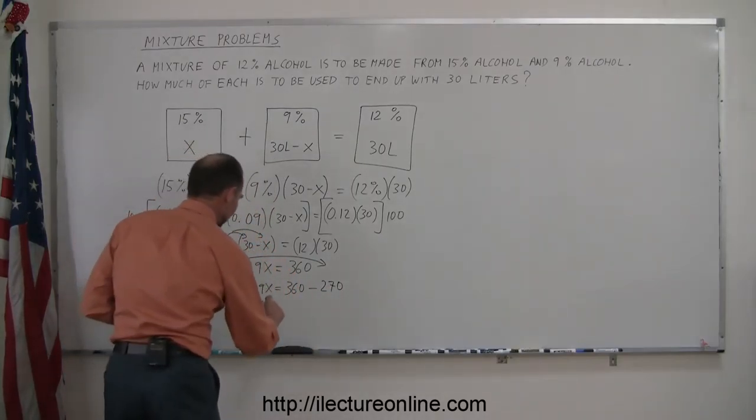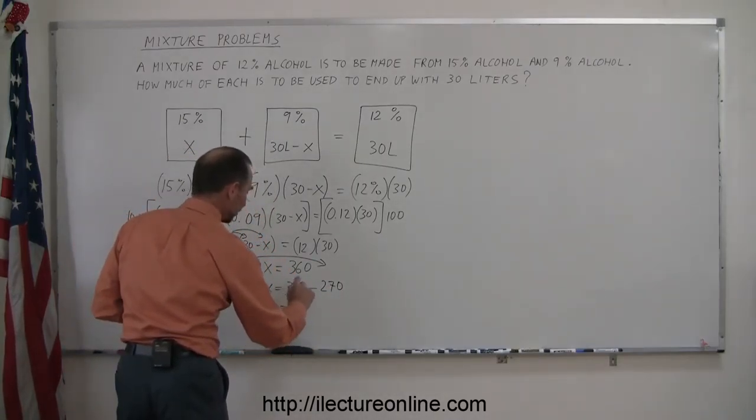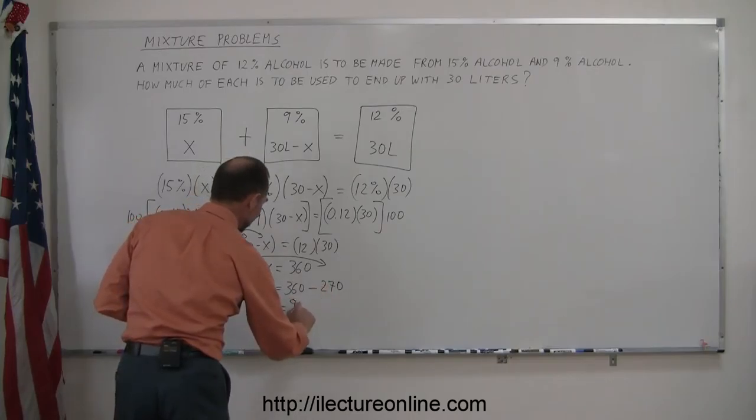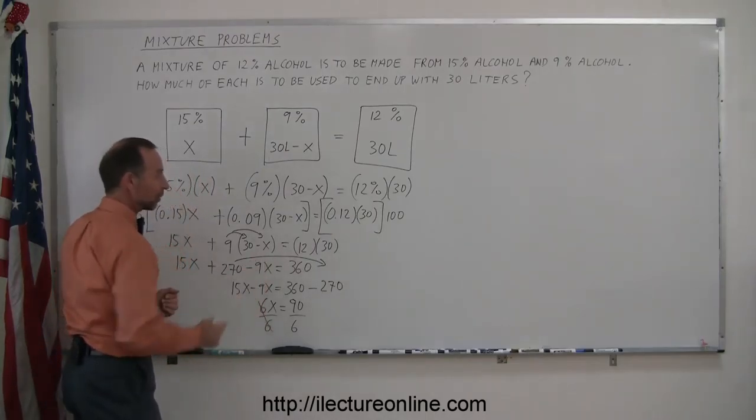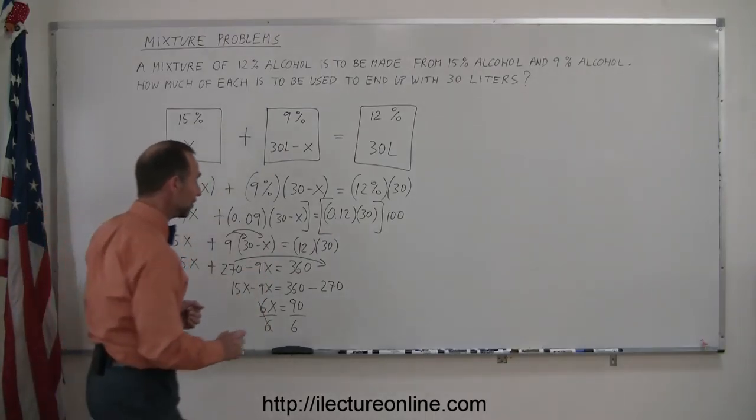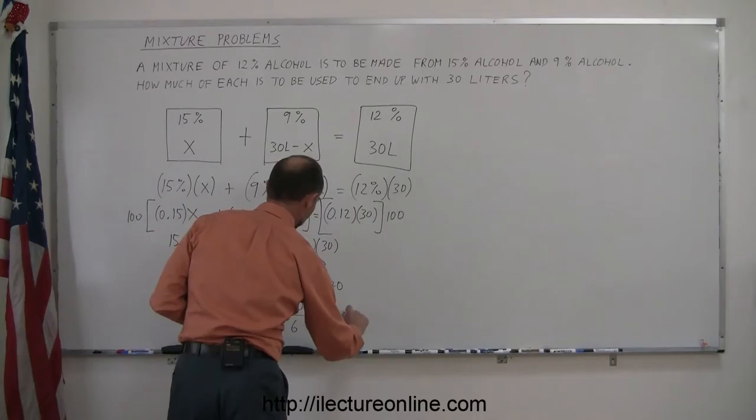15x minus 9x is 6x. 360 minus 270 is 90. Divide both sides by the coefficient in front of the x. So we get x equals 90 divided by 6 which is 15, x equals 15.